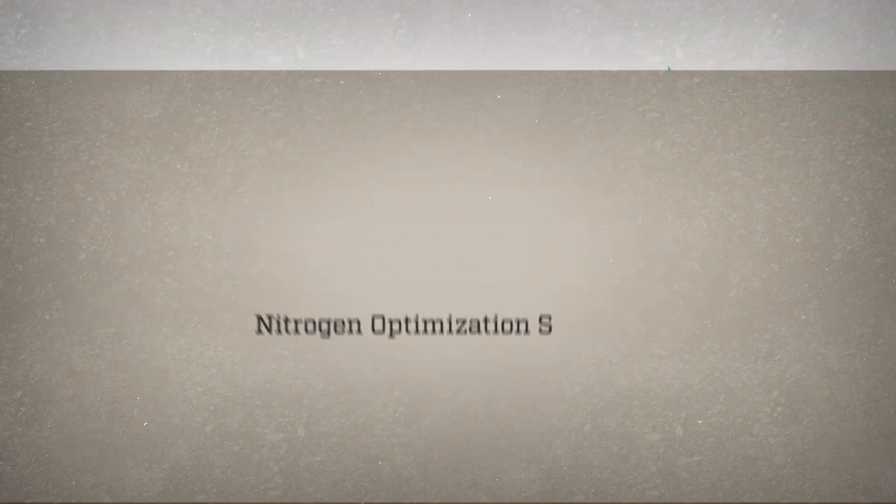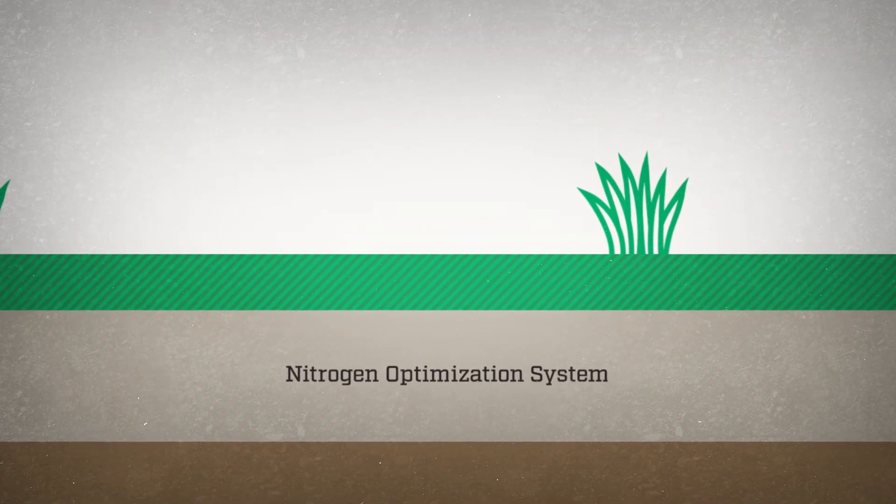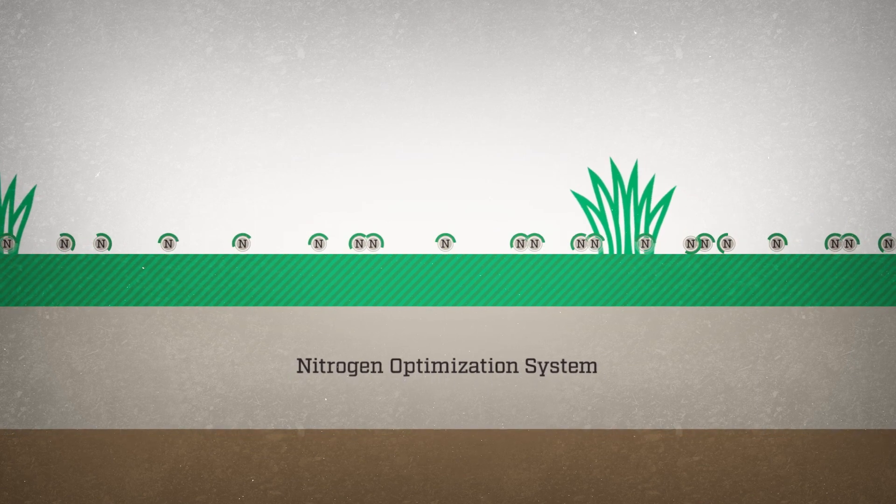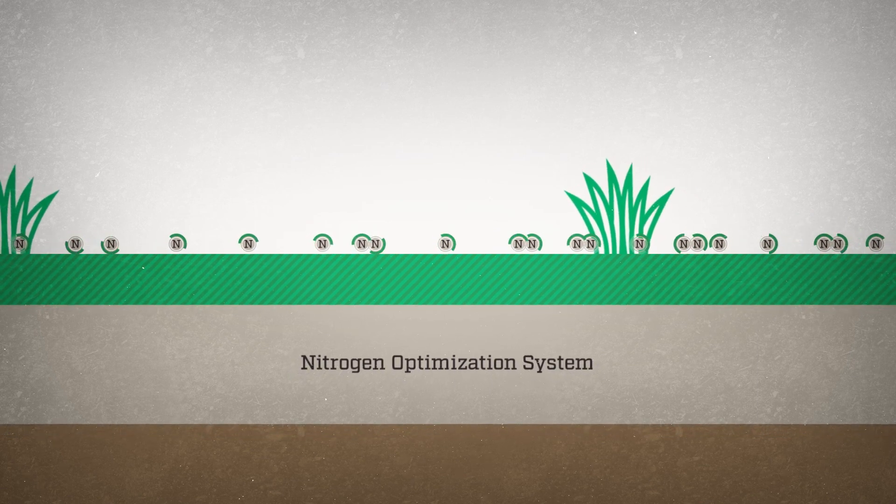NOS, or Nitrogen Optimization System, delivers stabilized nitrogen to the soil through spread or spray application. This makes nutrients more available for uptake compared to fertilizers with unstabilized urea-based nitrogen.